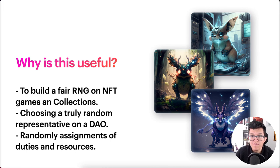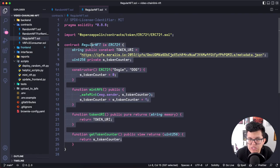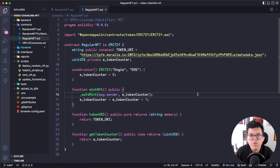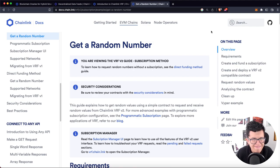Chainlink VRF has a lot of applications. We can build a fair RNG for our NFT games and collections, as we are going to do in this tutorial. We can choose a truly random representative for a decentralized autonomous organization, or randomly assign duties and resources on a team or DAO. So instead of using this simple NFT contract, we are going to use Chainlink VRF to get a random number and generate a random NFT. But first, we need to understand how to get that random number.